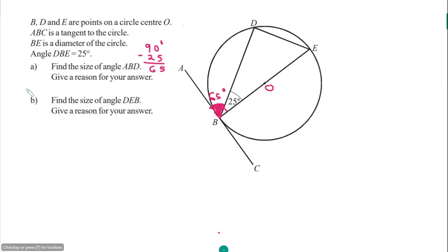For question b, we need to find the size of angle DEB. This angle is in the alternate segment to angle ABD. So angle DEB is also 65 degrees. The reason: alternate segment angles are equal.